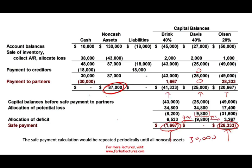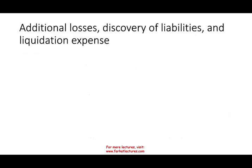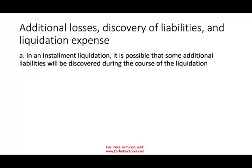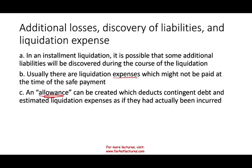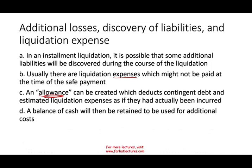In the next session I'll work a more comprehensive example — maybe two or three schedules. Regarding additional losses, discovery of liabilities, and liquidation expenses: as you're making payments, it's possible that additional liabilities will be discovered during the course of the liquidation. Also, there are usually liquidation expenses — lawyers, accountants, consultants — that help you go through the liquidation. Under those circumstances, we have to create an allowance — a contingent liability for those payments. A balance of cash will be retained to be used for these expenditures.